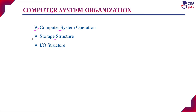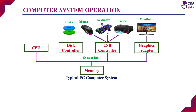First, in this session, we will discuss computer system operation. The computer system will have one or more CPUs, a number of device drivers, and shared memory that will be connected through a common system bus. The communication between the CPU and all its device drivers to access memory has to go through the system bus only.